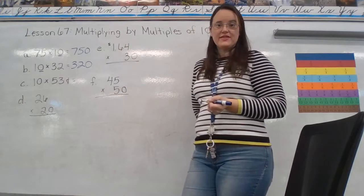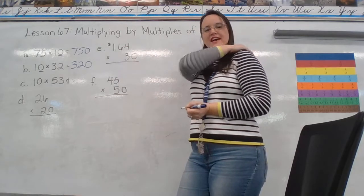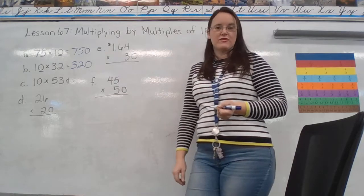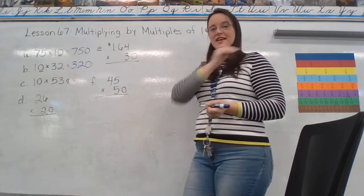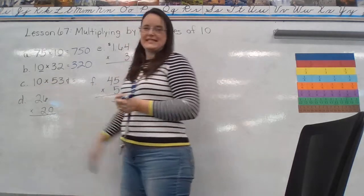So, for A, if you got 750, give yourself a pat on the back. B, if you got 320, give yourself another pat on the back. And moving on to C.